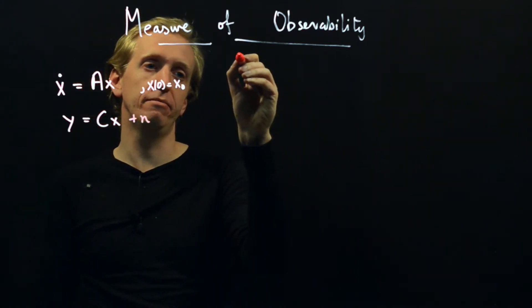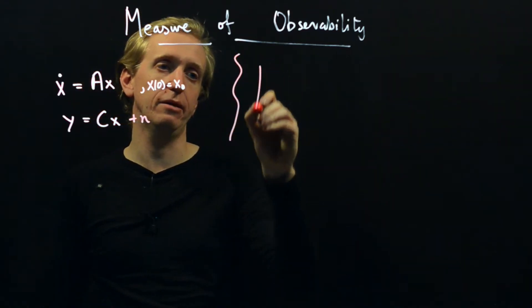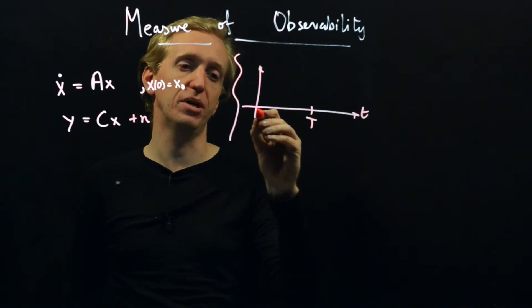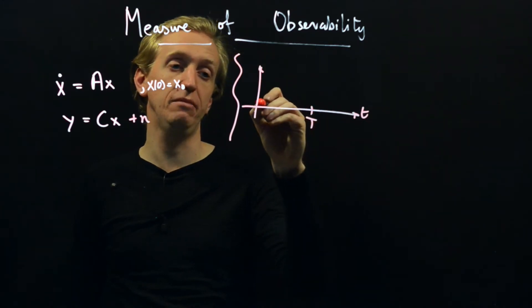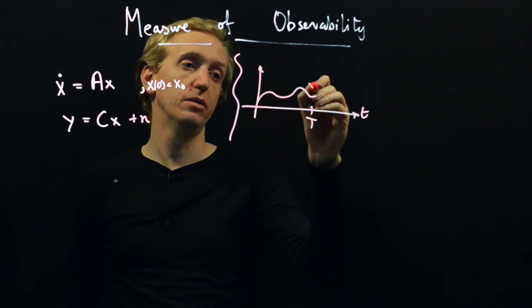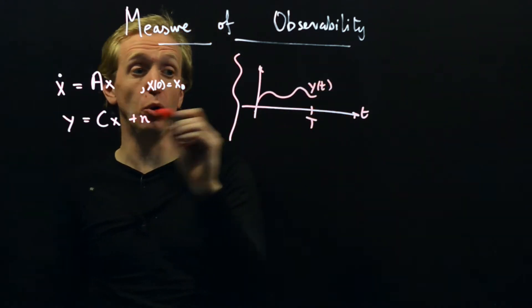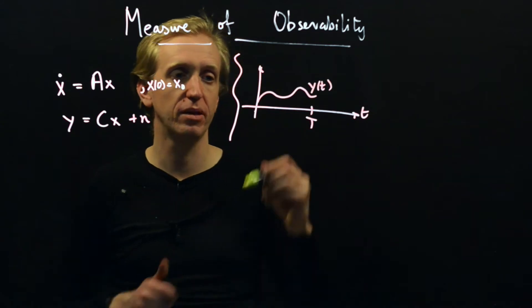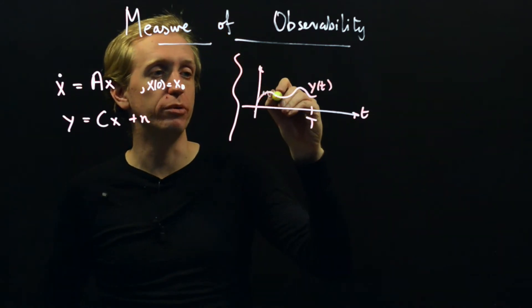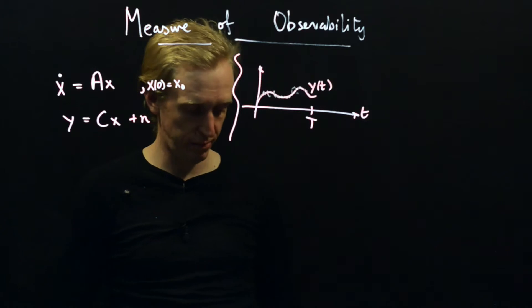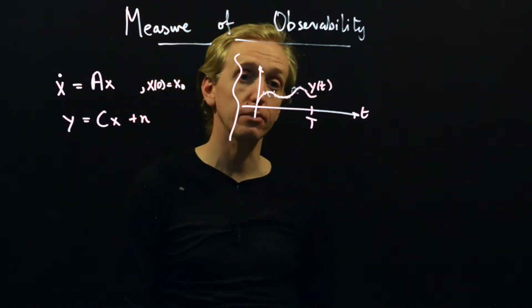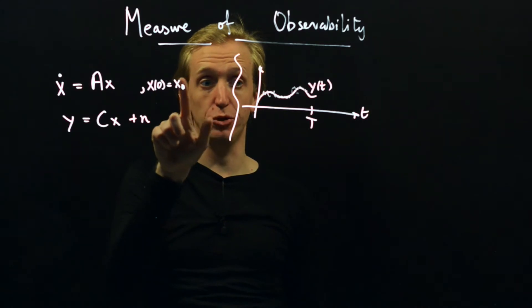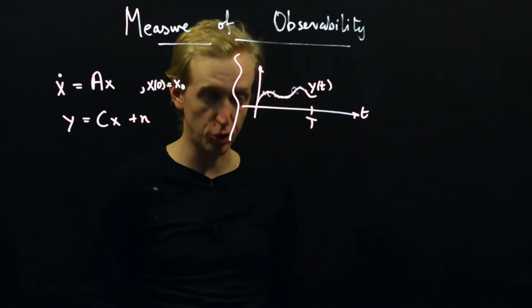So the problem we're interested in here is we have some measurement of our output y from time t equals zero to capital T. That's our measurement y of t. It's got some noise in there, so maybe it'd be better... it's sort of maybe a bit more jaggedy, perhaps something more like that. And we would like to come up with the best estimate for our initial condition x0 based on this noisy measurement.